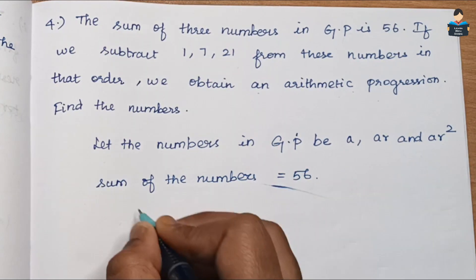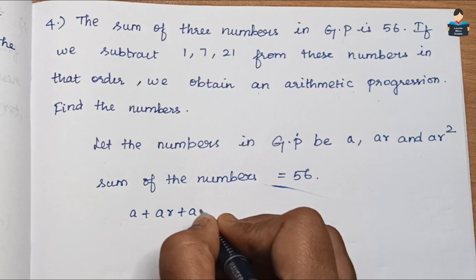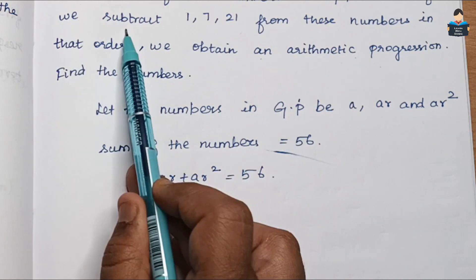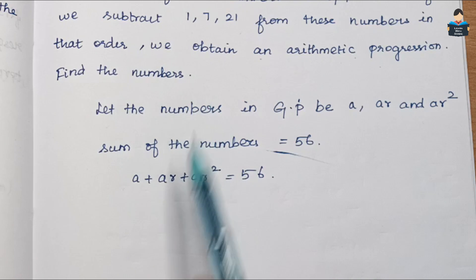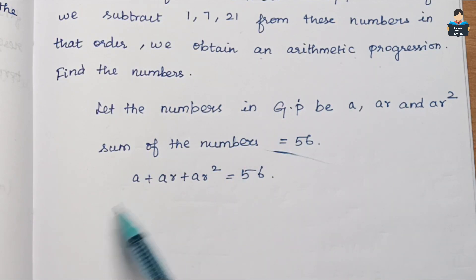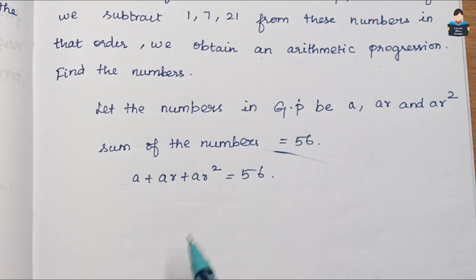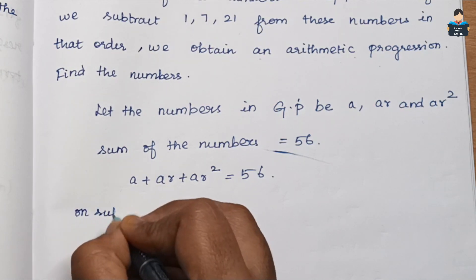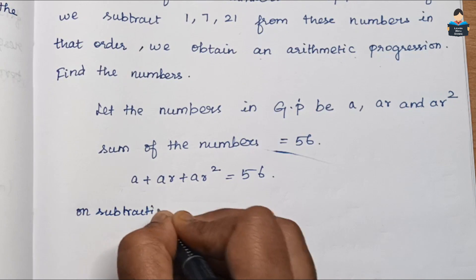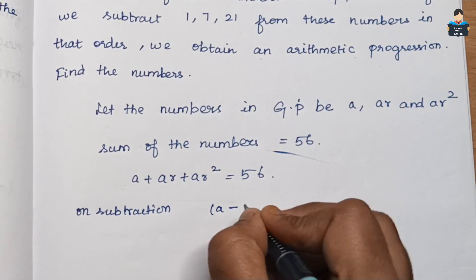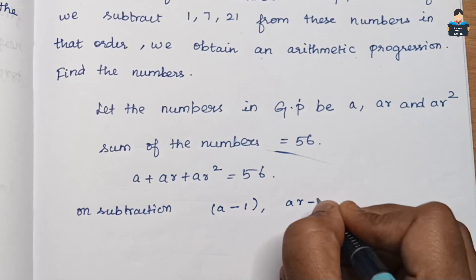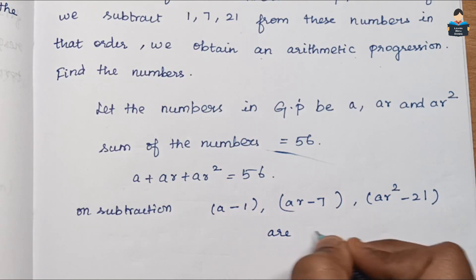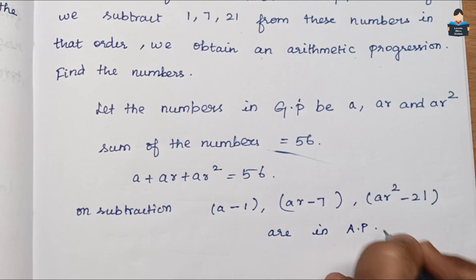The sum of the numbers: a + ar + ar² = 56. If we subtract 1, 7, and 21 from each respectively, the resulting numbers are a − 1, ar − 7, and ar² − 21, and these form an arithmetic progression.